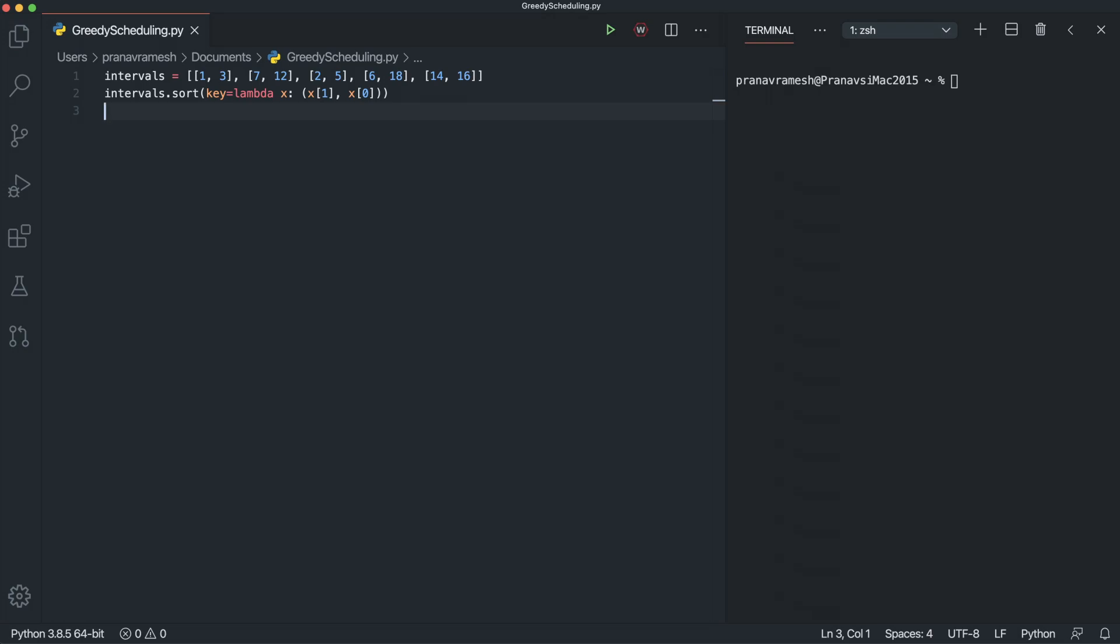Once we have that, we can actually start the process of traversing through these sorted list of intervals. So we can create a count variable. Count = 0. And count will keep track of the greatest number of events that we could visit. Now just for reference, we'll also keep a list called visited. This is not required in your algorithm, but we're just keeping it so we can see what intervals we're actually going to include. And then we're going to need one more variable called end. And this one is required for this program to work because end is going to keep track of the current time that we're at in terms of event scheduling. So it'll be -1.